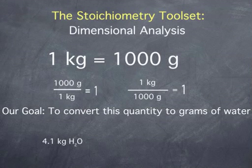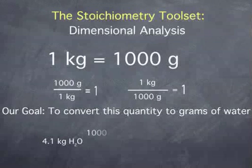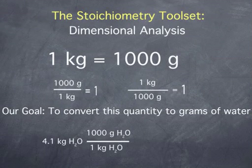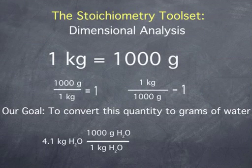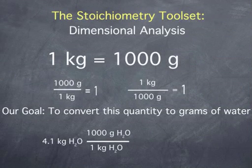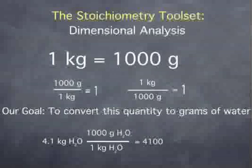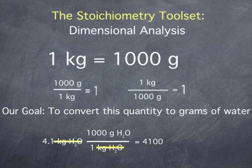We begin by writing down our initial quantity of 4.1 kilograms water. Next, we multiply by the ratio 1,000 grams water over 1 kilogram of water. Remember that this ratio is equal to 1, so we are just multiplying our initial quantity by 1. This does not change the amount of water — it merely changes the units. This multiplication gives the value 4,100. To determine the units of this quantity, we cancel the kilograms water and are left with grams water.